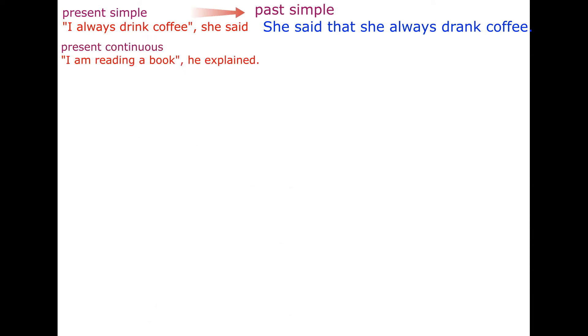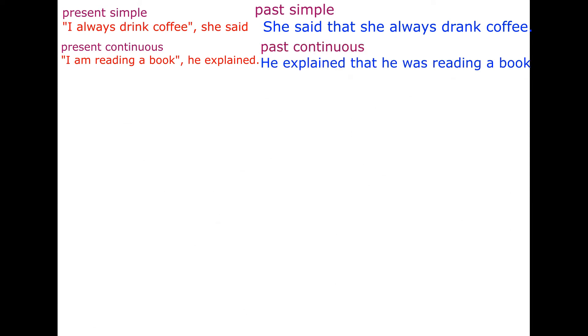Present continuous: 'I am reading a book,' he explained. He explained that he was reading a book.